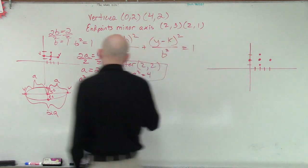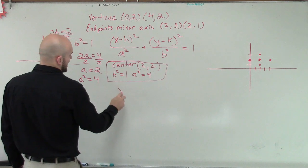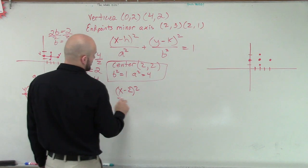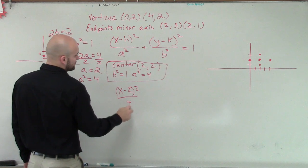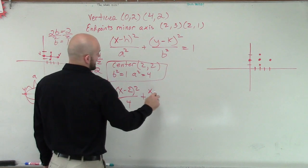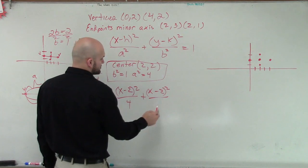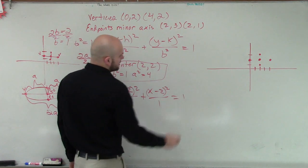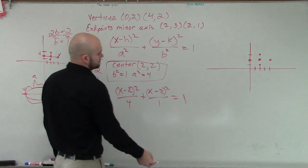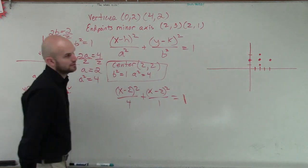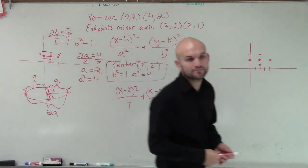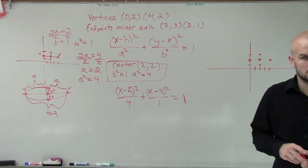So therefore, let's just plug it in. So we have our center. So it's going to be X minus 2 squared over A squared, which is 4, plus X minus 2 squared over 1, which we don't really need to write, but I can say, well, equals 1. Okay. And that's it.